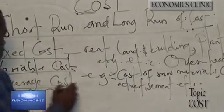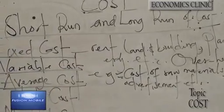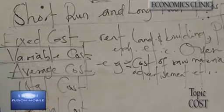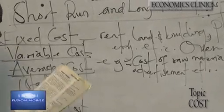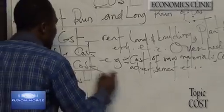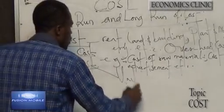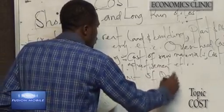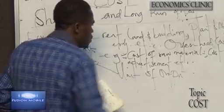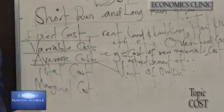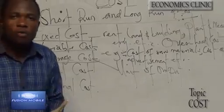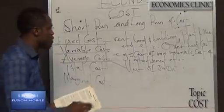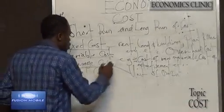Next is average costs. These are costs that are incurred on the production of a unit output. The cost of producing one of the commodity is actually average cost.